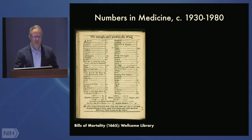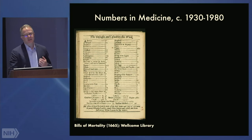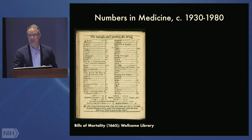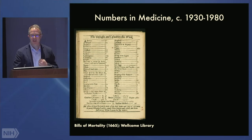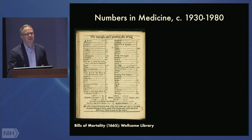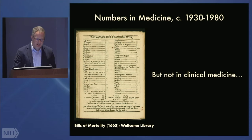Thank you very much. This talk sits at the center of my ongoing research on the ways in which numbers have transformed medicine across the 20th century. In 1930, numbers were essentially where they had been in medicine centuries earlier — mainly used in public health and epidemiology, with the paradigmatic example being the London Bills of Mortality. By and large, in 1930, numbers were not in clinical medicine.